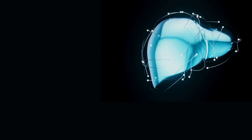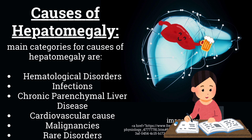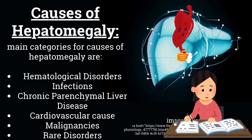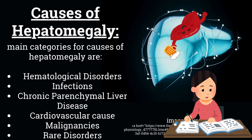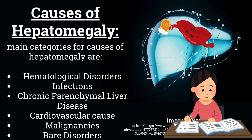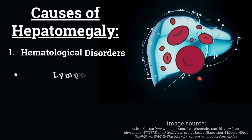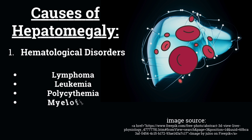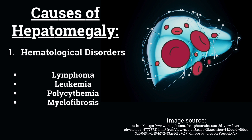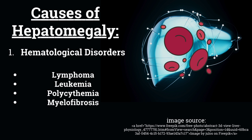The main categories for causes of hepatomegaly are: hematological disorders, infections, chronic liver disease, cardiovascular causes, malignancies, and rare disorders. Number one — hematological disorders — includes diseases like lymphoma, leukemia, polycythemia, and myelofibrosis.